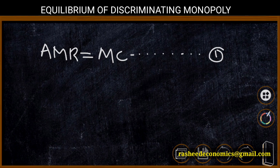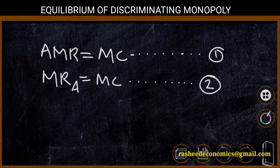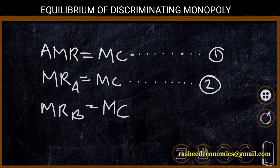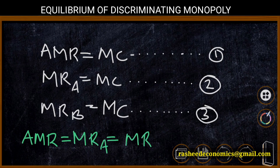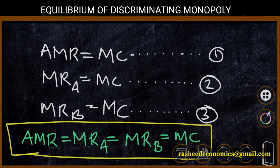For the allocation of total output to different markets, we consider the following conditions. For market A, MR_A must be equal to MC. On the basis of this condition, the monopolist allocates total output to market A. Similarly, MR_B equals MC is the condition of allocation to market B. Therefore, marginal revenues from different markets should be equal to the marginal cost of total production. The final equilibrium condition is: AMR = MR_A = MR_B = MC. This is the final equilibrium condition of the discriminating monopolist.